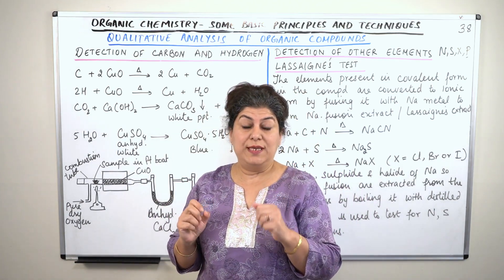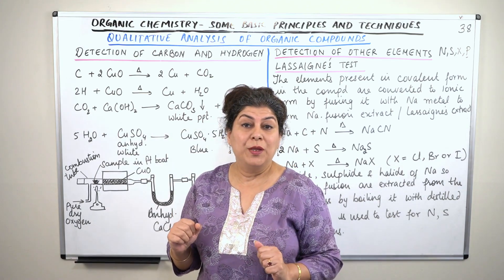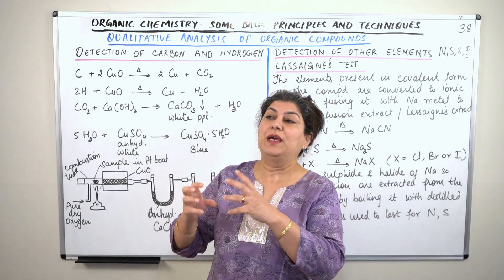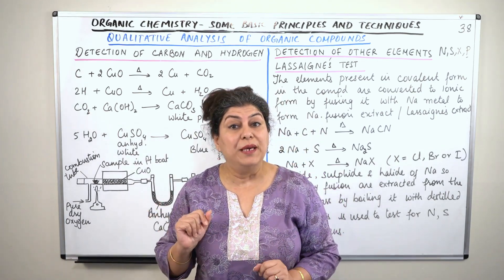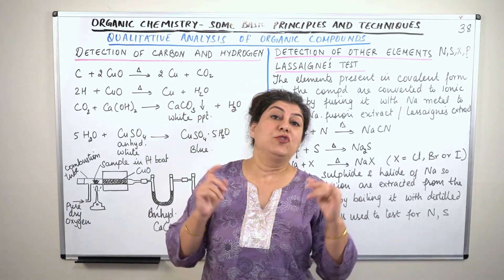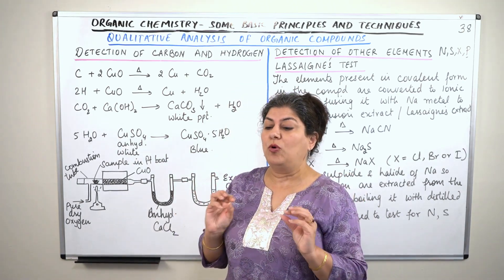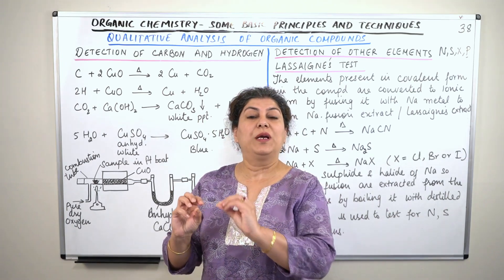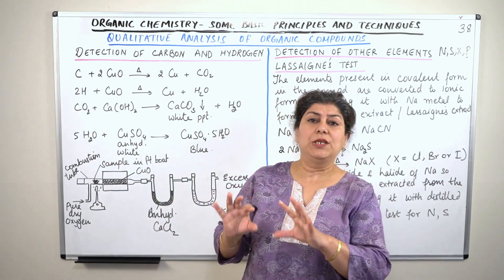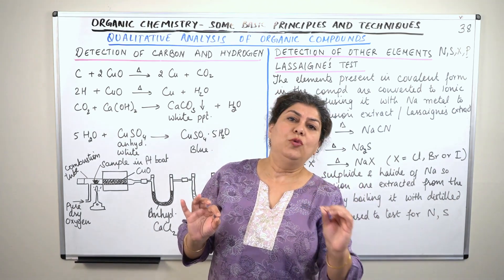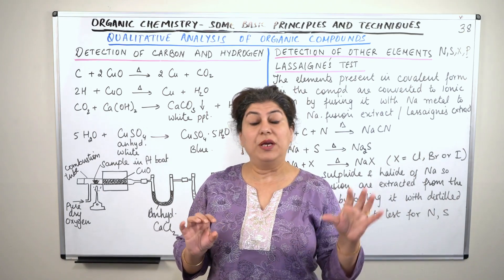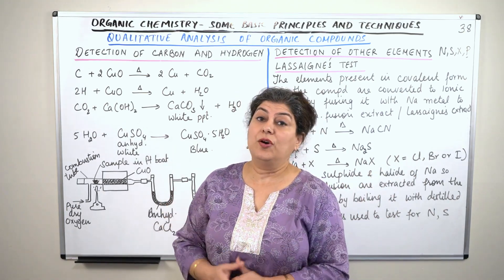The first step is to know that the compound contains carbon and hydrogen — that it is a hydrocarbon. So the first step is confirming the presence of carbon and hydrogen. If carbon and hydrogen are present, you can say that it is an organic compound, covalent in nature.